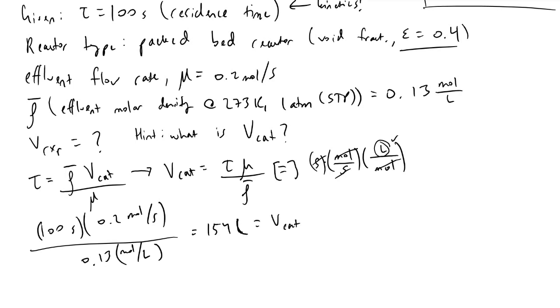We also know that we can determine the volume of our overall reactor by dividing the volume of our catalyst by 1 minus the void fraction epsilon. With this information, we determine that our reactor must have a volume equivalent to 256 liters.